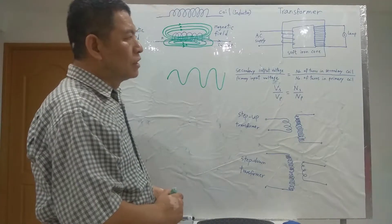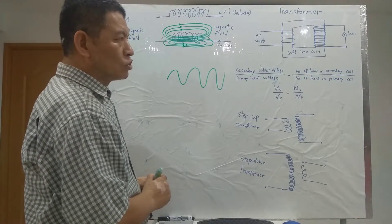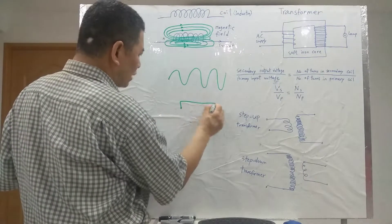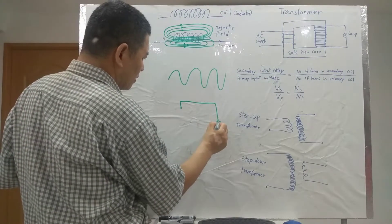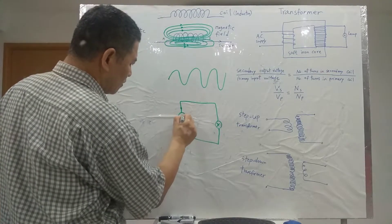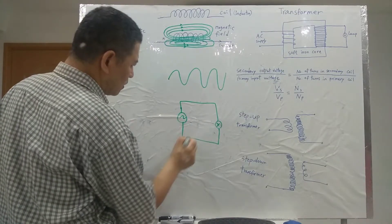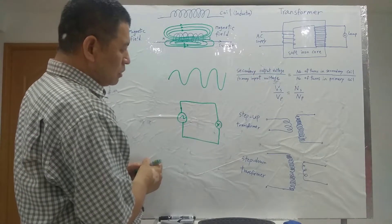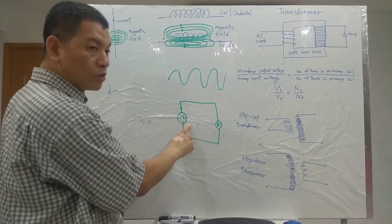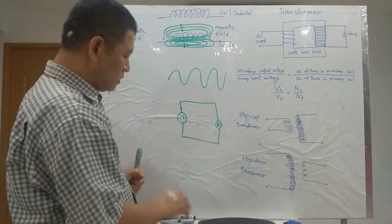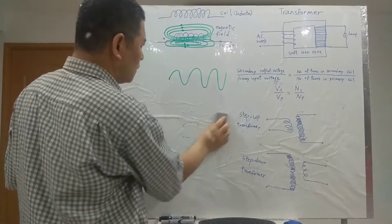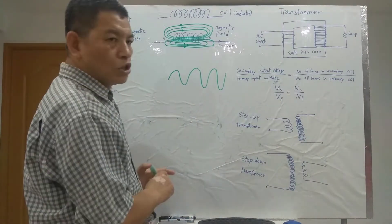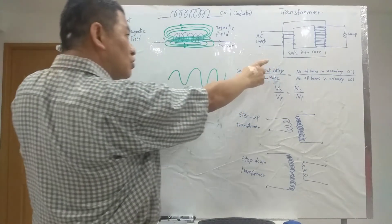You may have a question: if the lamp needs a voltage to pass through with current, why not directly use the AC voltage to pass through the lamp? Why do you need to use a transformer? Because this voltage might not be suitable for the lamp.